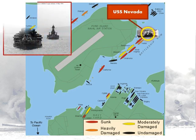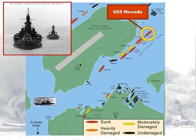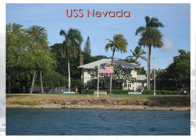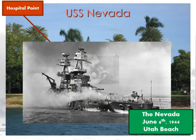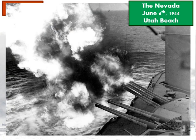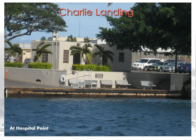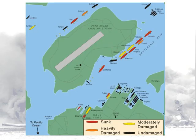The USS Nevada valiantly tried to make its way out — it was crippled but not totally destroyed. It made it almost out of the harbor, but then the crew realized if she kept going and was attacked again, she would completely block the harbor, locking all the other ships in. So she eventually moved to an area known as Hospital Point, where they rescued everybody from the ship and began bringing injured people from other ships. The USS Nevada would eventually be restored and go on to fight in the D-Day battles on Utah Beach on June 6, 1944.